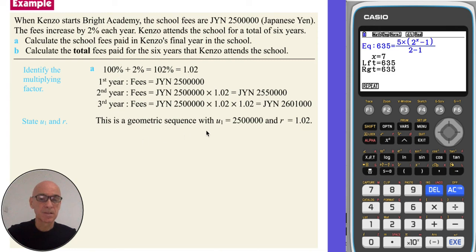So we can see that this is a geometric sequence, with the first term u1 of 2,500,000 and a common ratio of 1.02. Now, if we use the formula for the nth term, as given in your formula booklet, replacing u1 with 2,500,000 and r with 1.02.